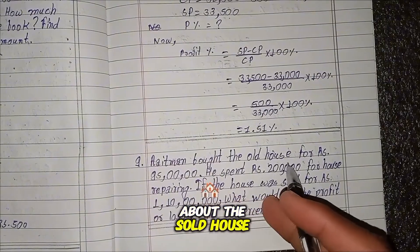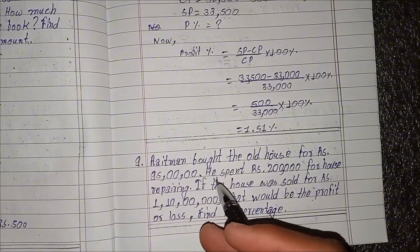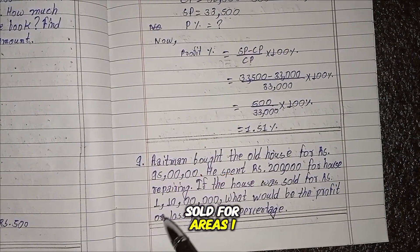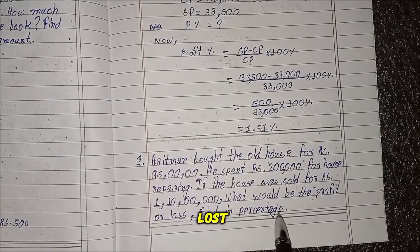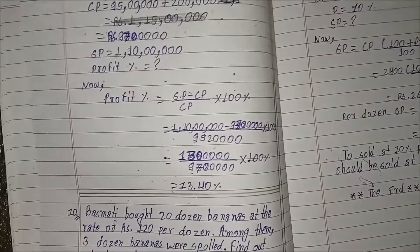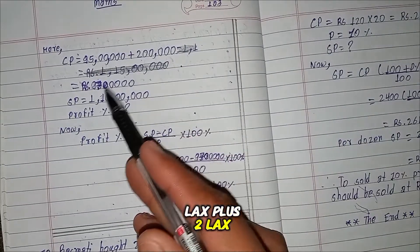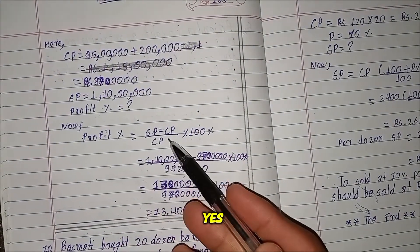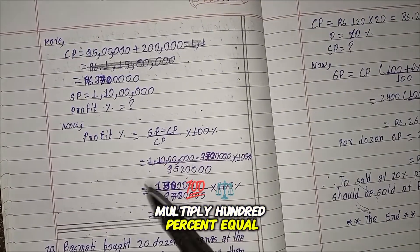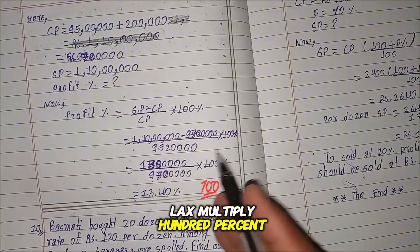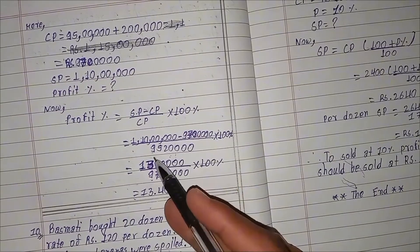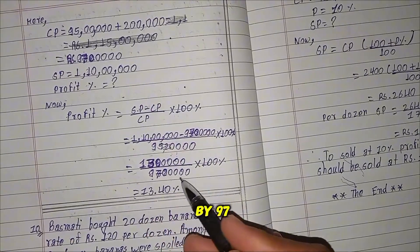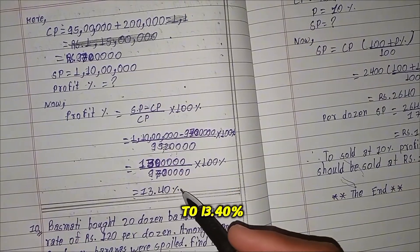Question 8 continued: A man bought a house for RS 95,000,000 and spent RS 2,000,000 for repairs. If the house was sold for RS 1,10,000,000, find the profit or loss percentage. CP equals 95,000,000 plus 2,000,000 equals RS 97,000,000. SP equals RS 1,10,000,000. Profit percent equals (1,10,000,000 minus 97,000,000) by 97,000,000 multiplied by 100 percent equals 13,000,000 by 97,000,000 multiplied by 100 percent equals 13.40 percent.